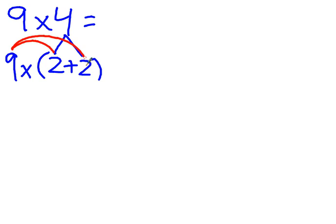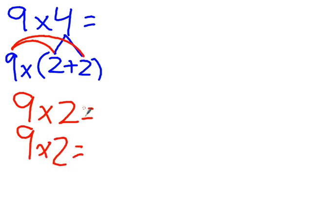So the first number I'm going to multiply is 9 times 2. And then the second one is 9 times 2. What's 9 times 2 equal? It does equal 18. Well if we know 9 times 2 equals 18 up here, what is 9 times 2 going to equal down here? It's also going to equal 18.